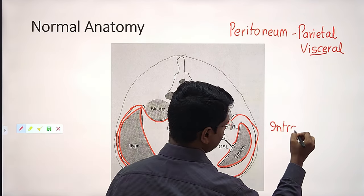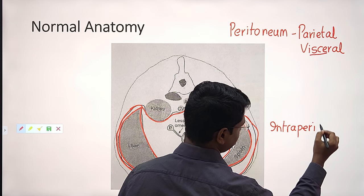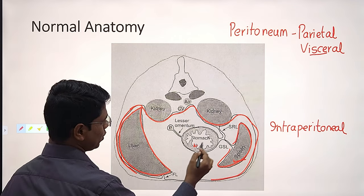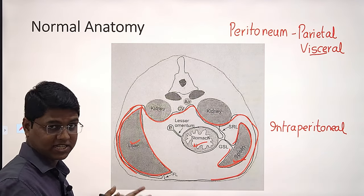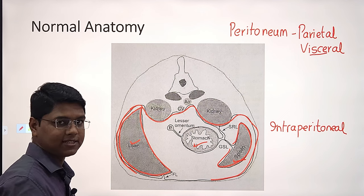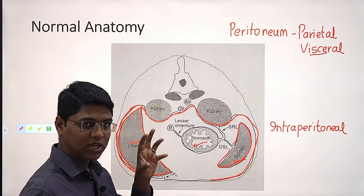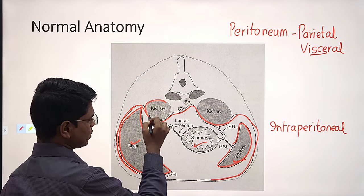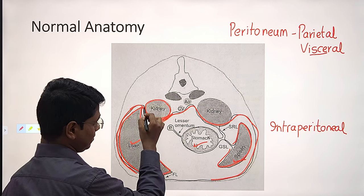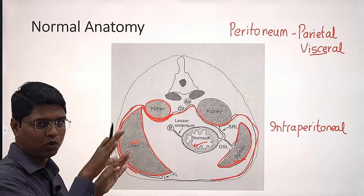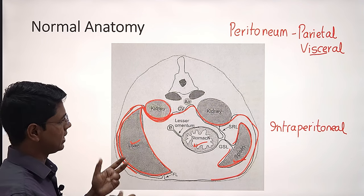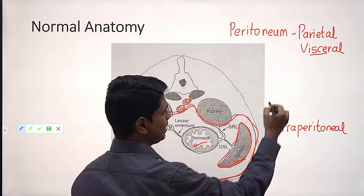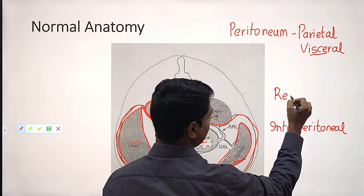Most of the organs are intraperitoneal, like spleen, stomach, liver, small intestines, and large intestines. There will be some organs which reside outside the peritoneum. For these structures, like the kidney, only the ventral part is lined by peritoneum, not the whole organ. These organs — especially the kidney, the caudal vena cava — they are retroperitoneal.